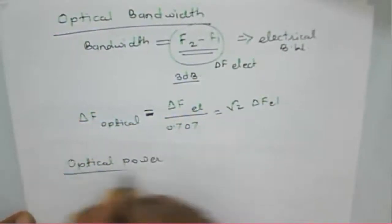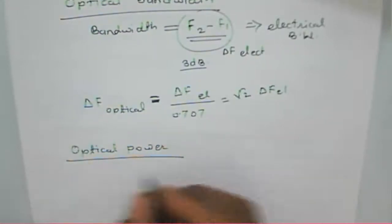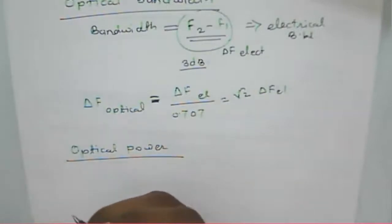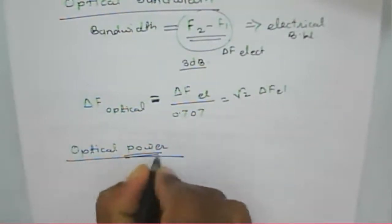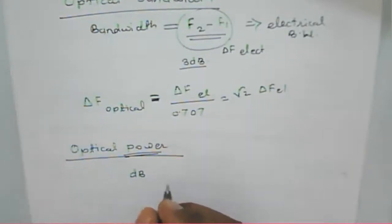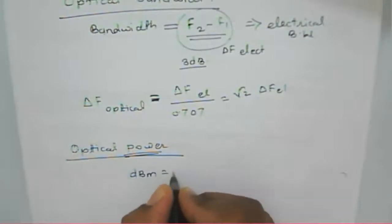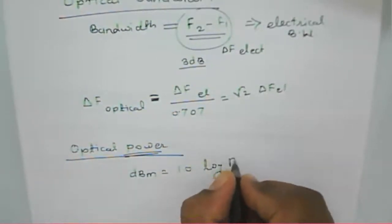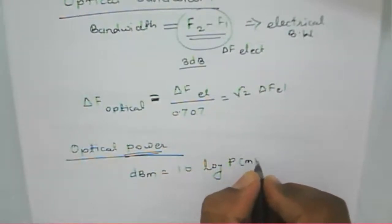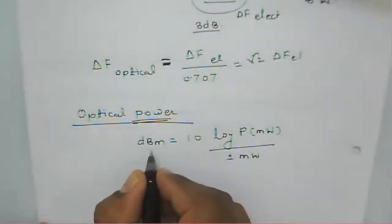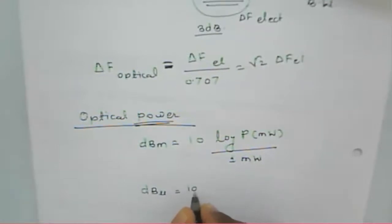Optical power is generally measured in terms of the loss in a given transmission or reception. Mostly, power in optical fiber is not considered in terms of dB but in terms of dBm. We calculate dBm as 10 log of power with respect to one milliwatt. Similarly, dB-micro is power with respect to one microwatt.